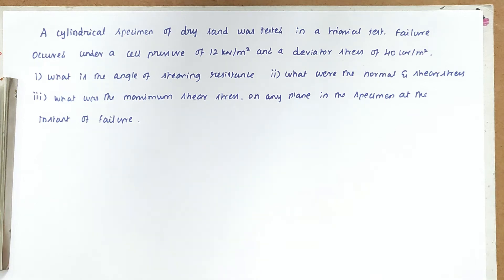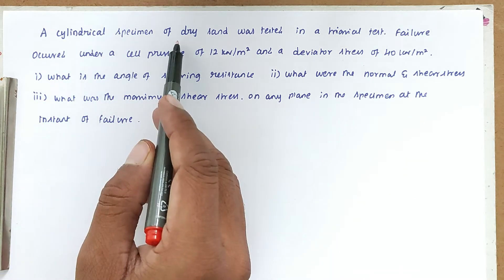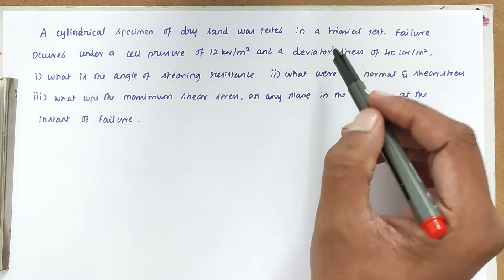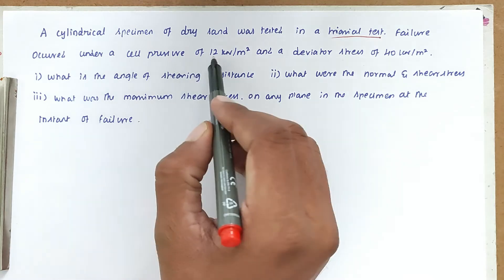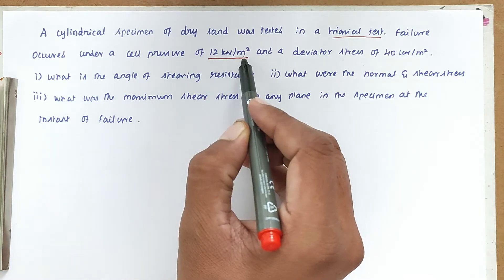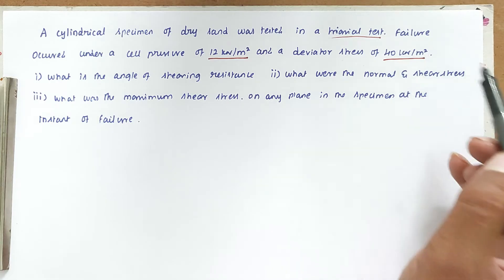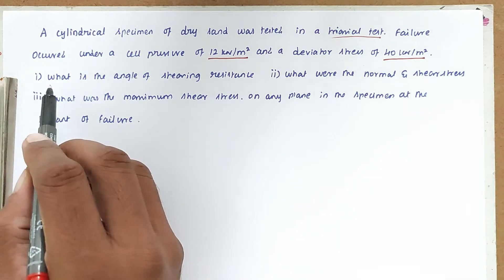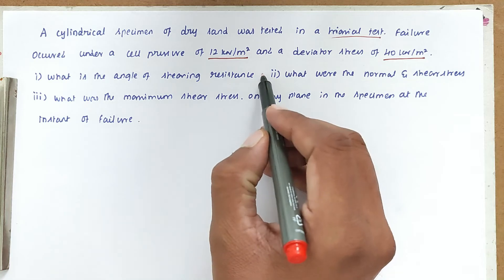Hello friends, welcome to Civil Engineering Exam. Today we are going to see a problem related to soil mechanics in the topic of shear strain. The problem is: a cylindrical specimen of dry sand was tested in a triaxial test. Failure occurred under a cell pressure of 12 kN/m² and a deviator stress of 40 kN/m².